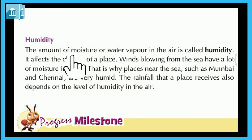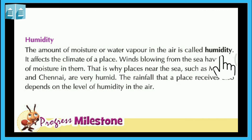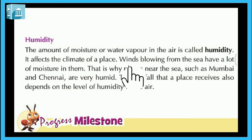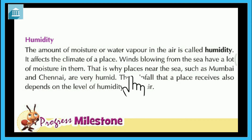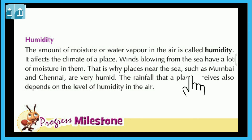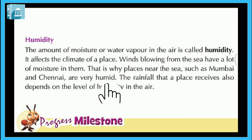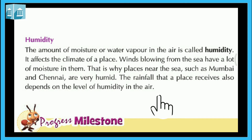Humidity: The amount of moisture or water vapor in the air is called humidity. It affects the climate of a place. Winds blowing from the sea have a lot of moisture in them. That is why places near the sea, such as Mumbai and Chennai, are very humid. The rainfall that a place receives also depends on the level of humidity in the air.